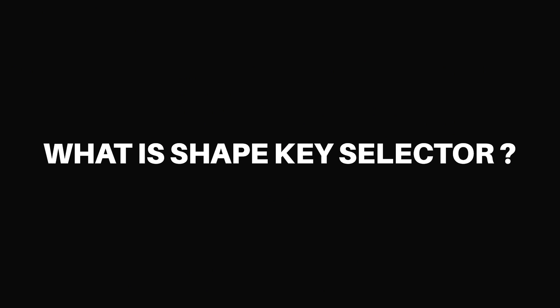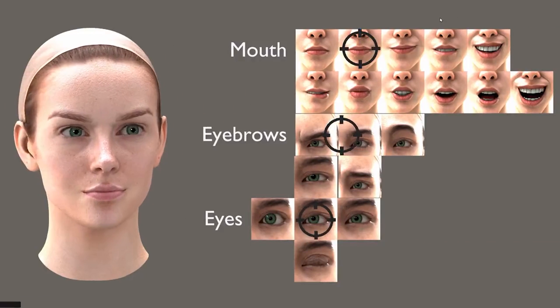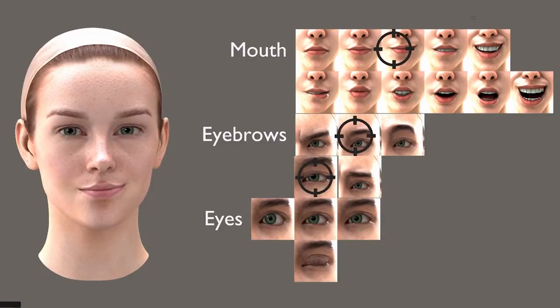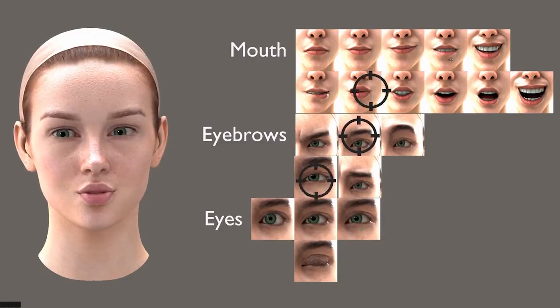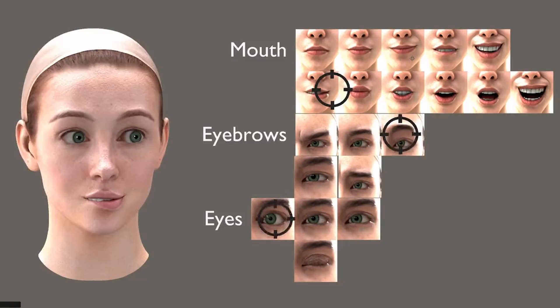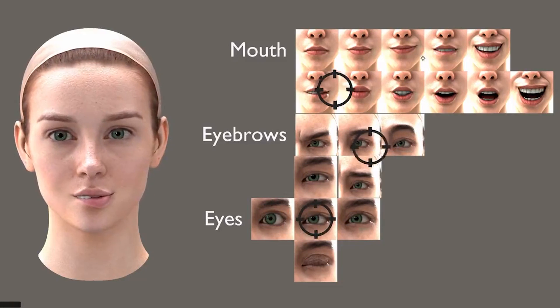So what is ShapeKey Selector? It is an add-on that lets you use shape keys to set up facial expressions for your characters without any rigging involved.